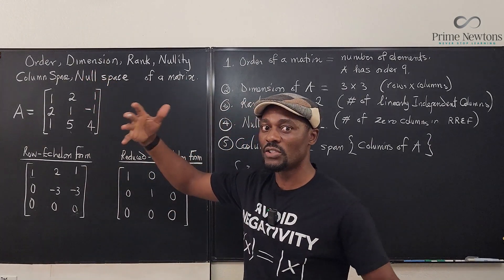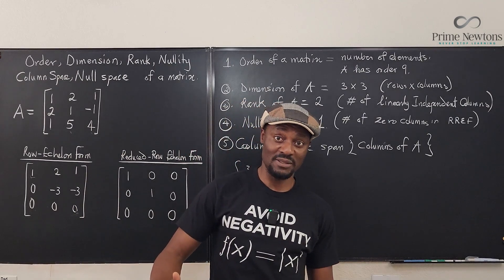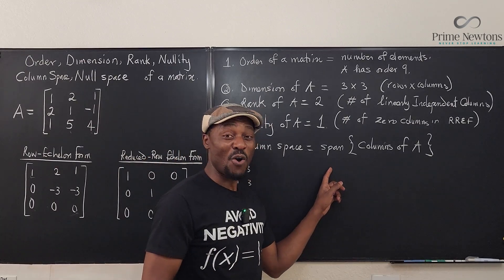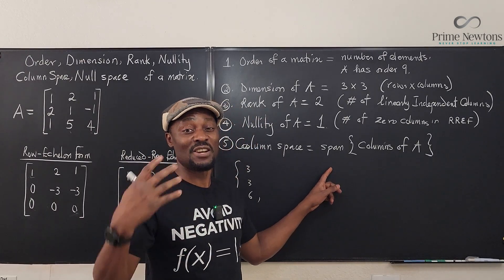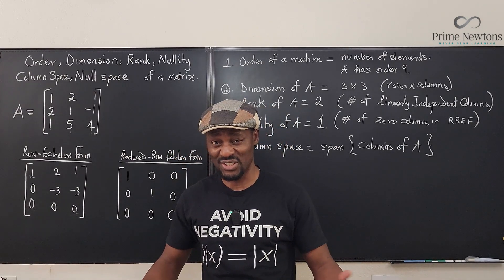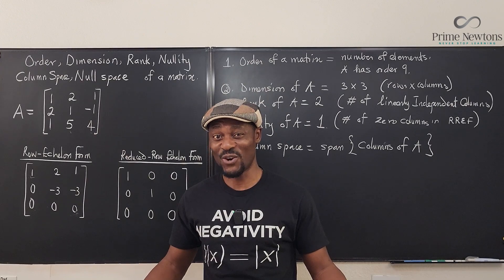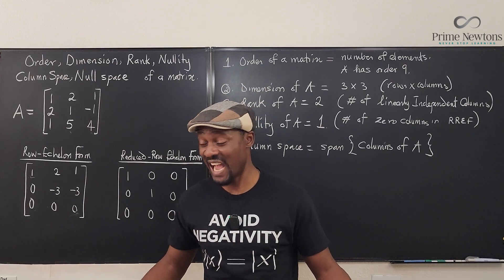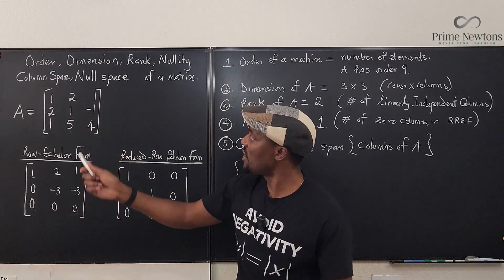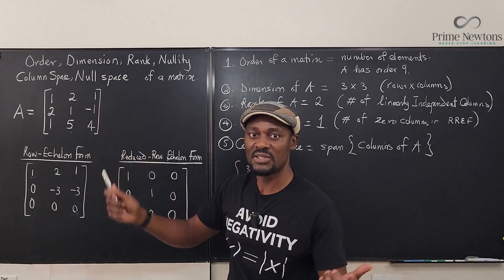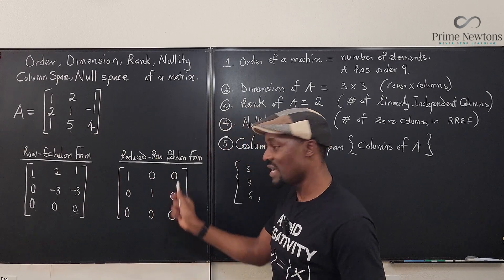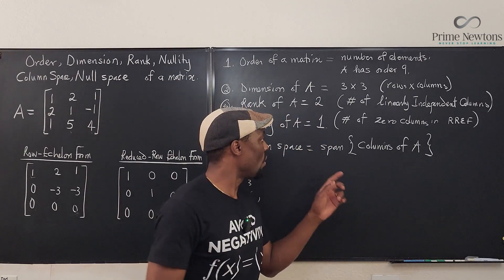What is the null space? The null space is the span of all possible things you can generate using the ghost columns — the null or zero columns. Remember, null means zero or nothing — or ghost, not real. So the span of the vector that ended up being a ghost is what you call your null space.